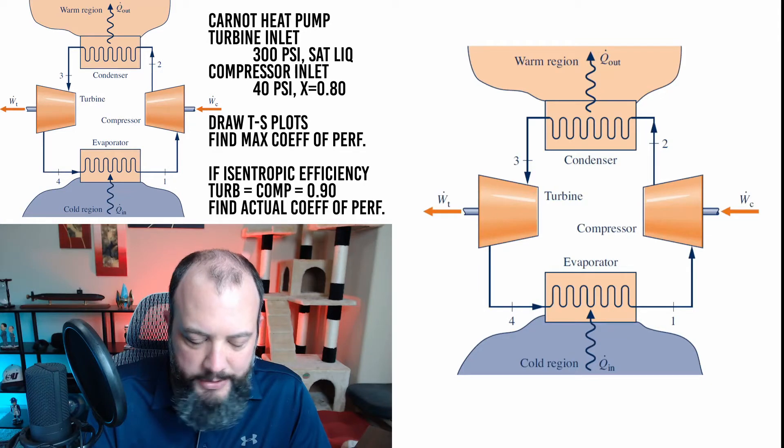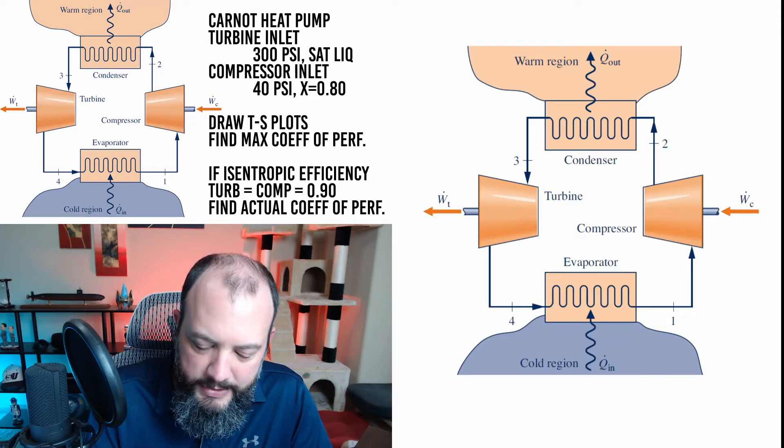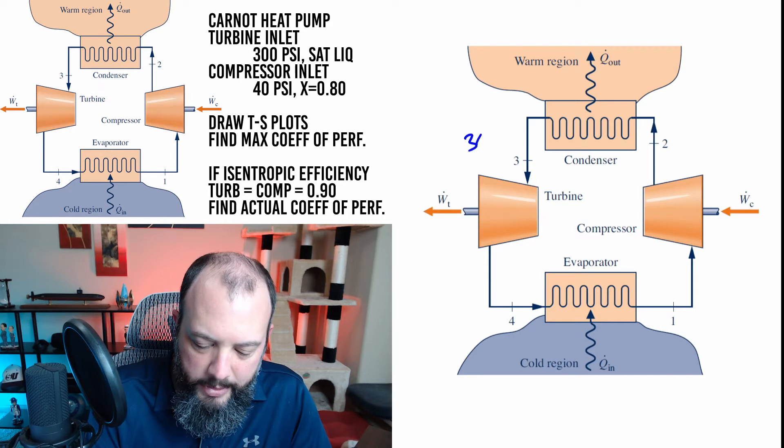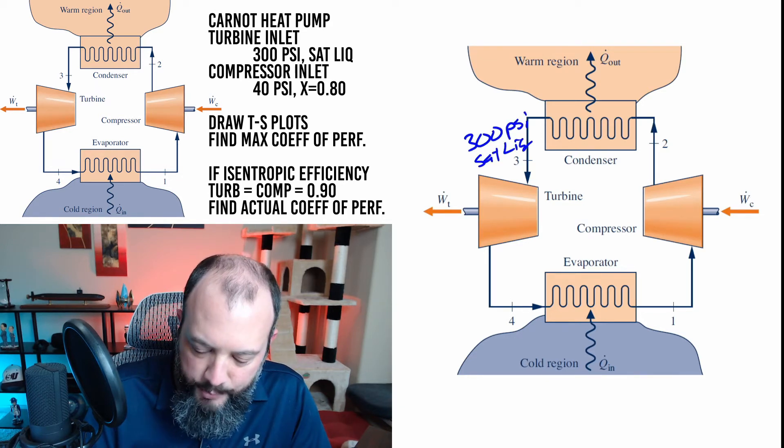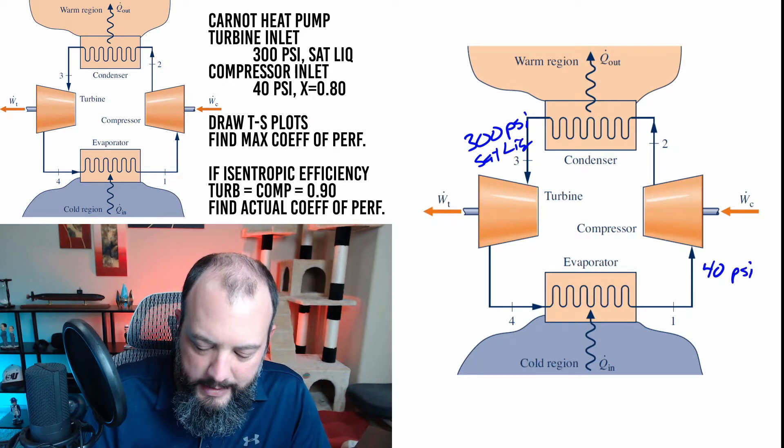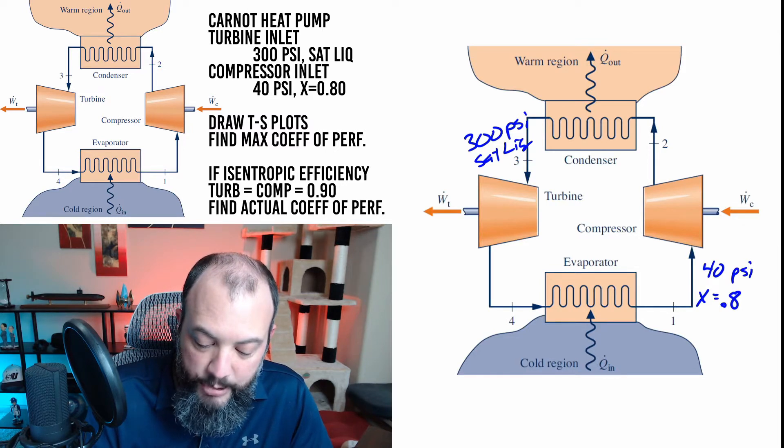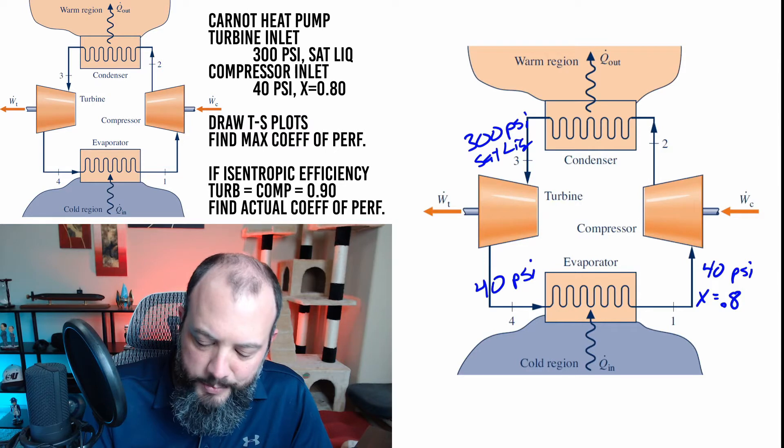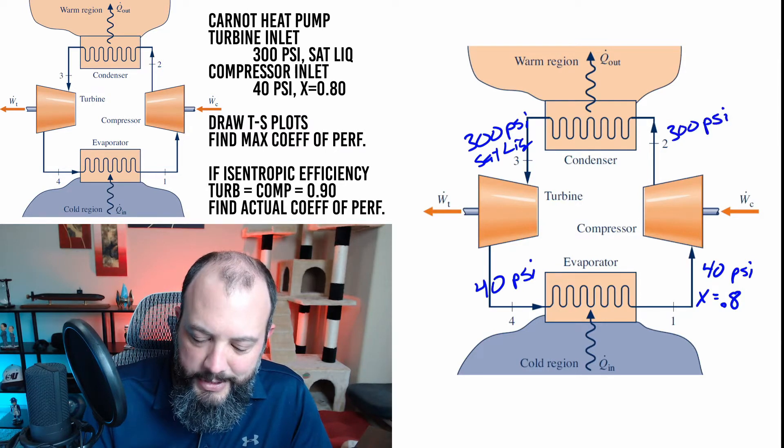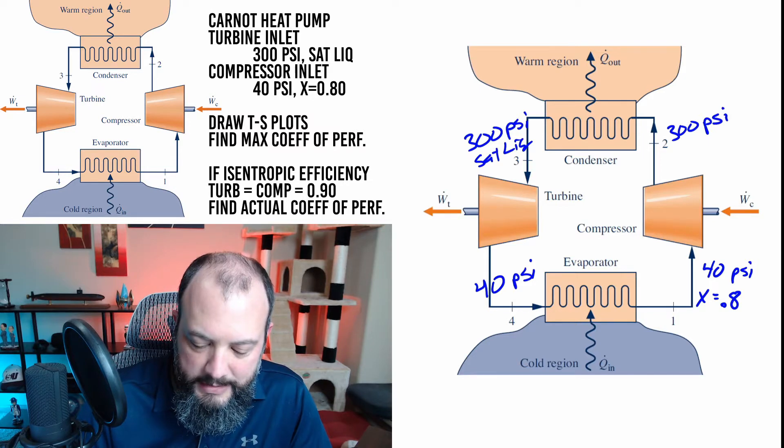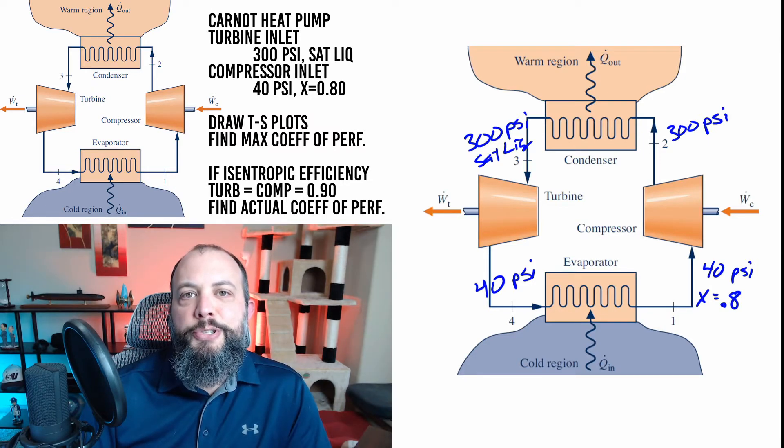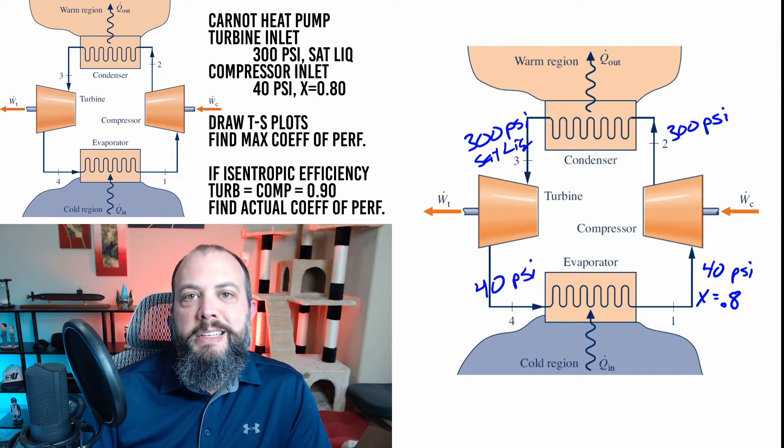I'll start my analysis by looking at the schematic and adding some of the initial conditions. So at the entrance to the turbine we're at 300 psi and it's a saturated liquid and at the entrance to the compressor we're given that it's at 40 psi and that we have a quality of 0.8. Since this is a Carnot heat pump we know that the entrance to the evaporator is going to be at the same pressure as the exit and the entrance to the condenser is going to be at the same 300 psi as the exit.